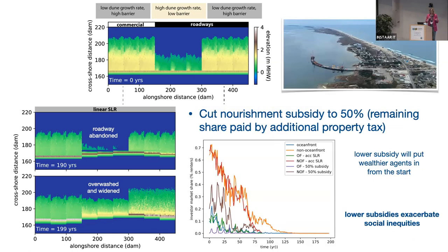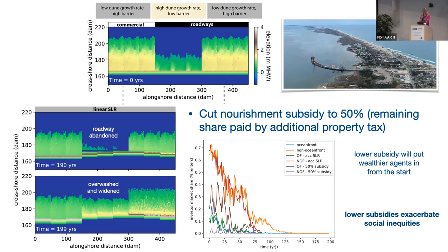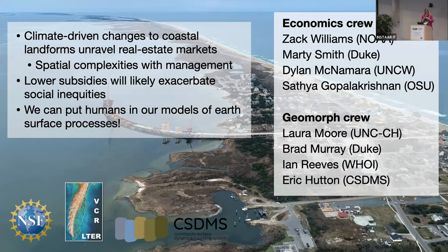What happens if we choose a different subsidy? If the government only subsidizes nourishment by 50%, putting more burden on communities, the brown line shows non-oceanfront properties with a 50% subsidy, and the purple line shows oceanfront properties. With this lower subsidy, there are more wealthy agents in the system from the start, and it's a much quicker drawdown to zero renters. Counterintuitively, these lower subsidies exacerbate social inequalities. There are social implications when coupled with these landscape changes and policies that we need to consider.